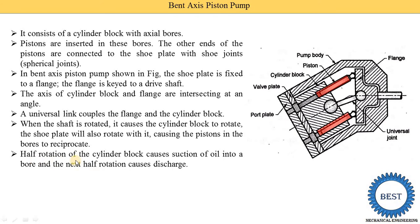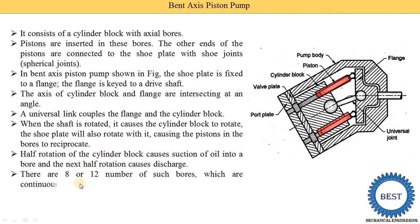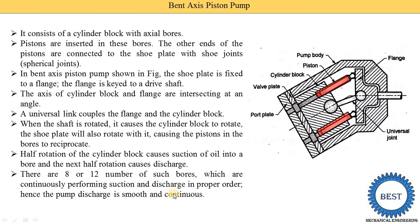Half a rotation of the cylinder block causes suction of fluid into the bore, and the next half rotation causes the discharge. So from one side suction takes place and from the other side discharge takes place. There are 8 or 12 such bores which continuously perform suction and discharge in a proper order — for example, at 0 degrees, suction is going on in 2 bores, and after 45 or 60 degrees, delivery is going on in 2 bores. This proper order is decided in advance.